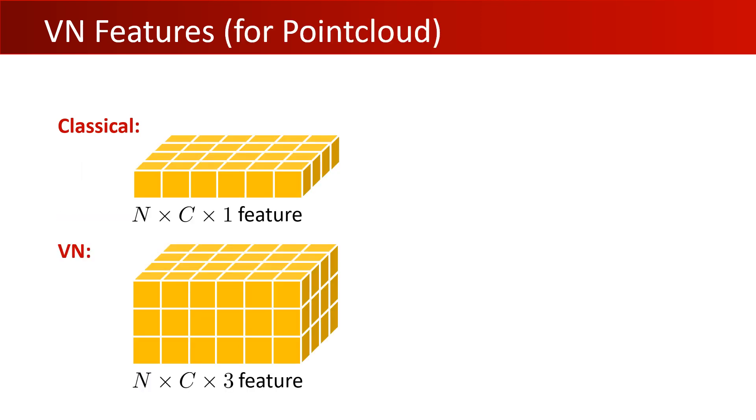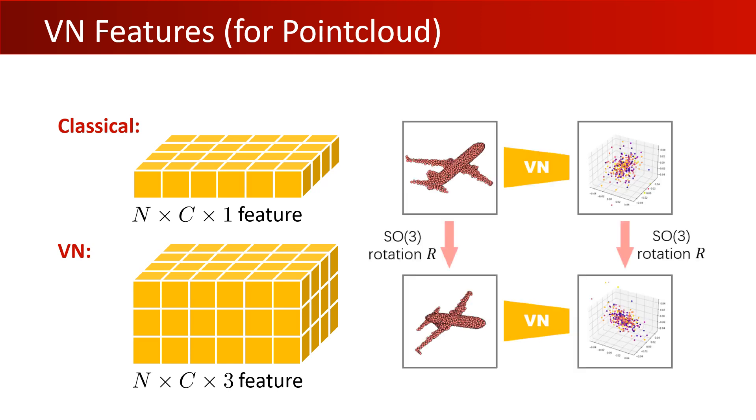Here shows a comparison between classical scalar neurons and vector neurons. For a point cloud with four-point features, the latent space tensor is now N by C by 3, where N is the unordered dimension and C is the channel dimension. With the vector-list latent representation, we can then facilitate equivariance in point cloud network architectures.